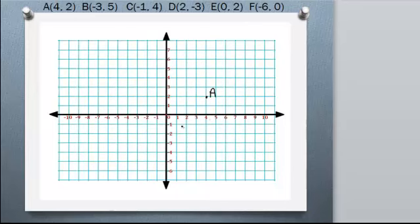Okay, for (-3, 5), we would go negative 3, so 3 to the left and then up 5. This would be point B.